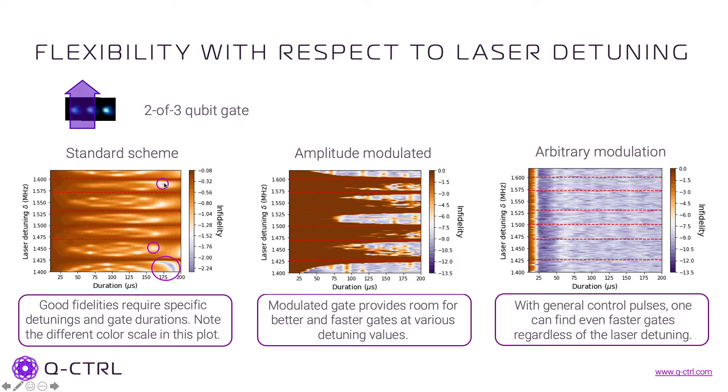When we start introducing modulations in our pulses, then those conditions are relaxed, and we can open up completely different regions where the gates work. Note first that the scales, the color codes are different here from the standard scheme to the control schemes. If we have just amplitude modulation, what we see is that we have good solutions for a wider range of parameters.